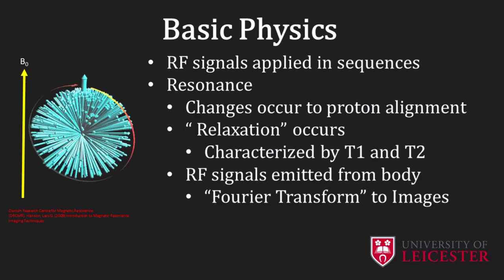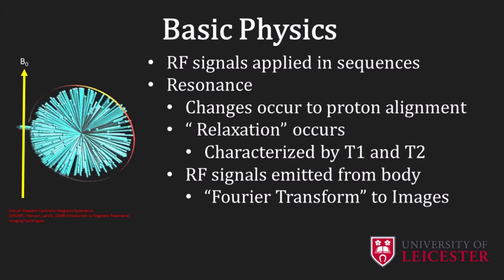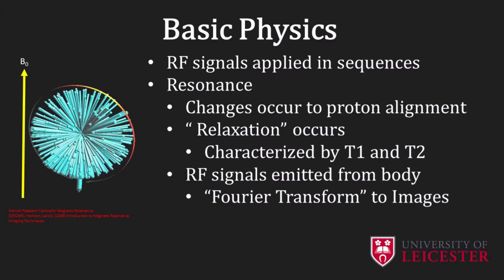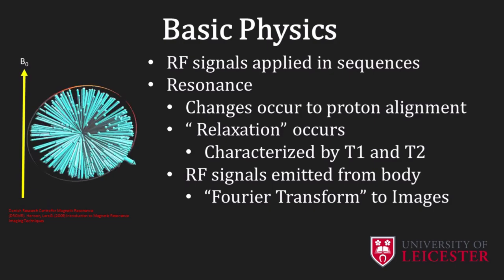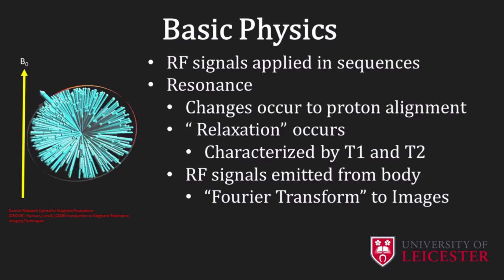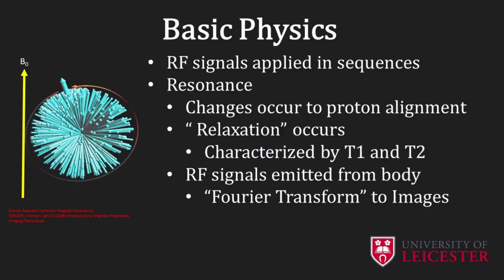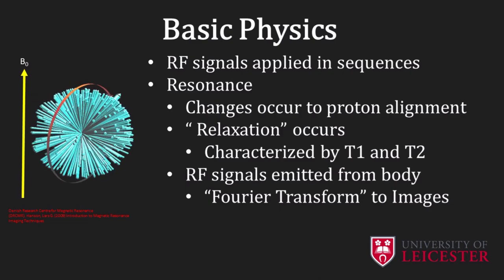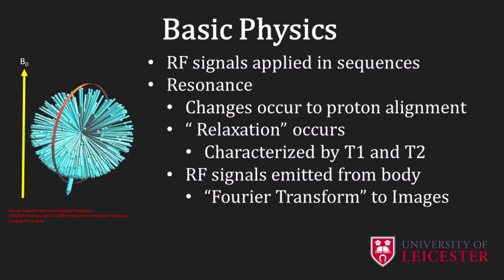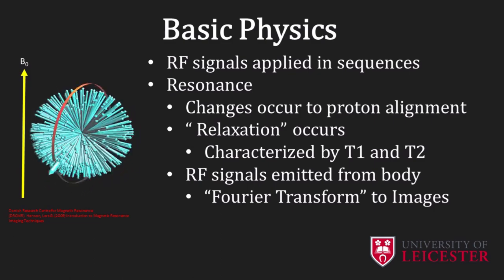In an MRI experiment, we may imagine the body contains lots of tiny bar magnets. When the subject is placed in a very strong external magnet, the tiny bar magnets in the body tend to align themselves with the direction of the external large static magnetic field. We can then apply radio waves to change the orientation of the tiny magnets. After we stop emitting radio waves, the tiny magnets will tend to return to their original orientations and return to thermal equilibrium in a process called relaxation. The relaxation process is characterized by exponential functions with time constants T1 and T2. Different tissues have different T1 and T2 relaxation time constants, and images can be produced with signal intensity dependent on these relaxation times.